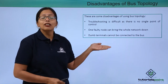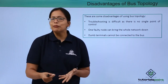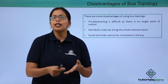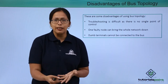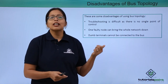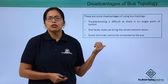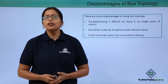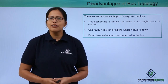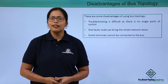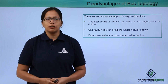Last but not the least, dumb terminals cannot be attached to the network. Dumb terminals don't have their own CPU or processing capability, so such terminals cannot be used to connect to a bus topology. In this video we have seen what bus topology looks like, how it functions, and what its advantages and disadvantages are. In the next video we are going to discuss ring topology.